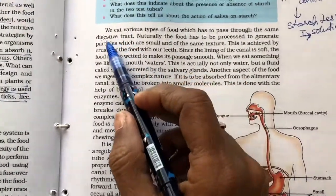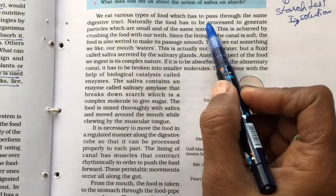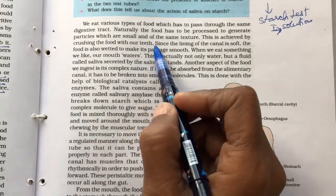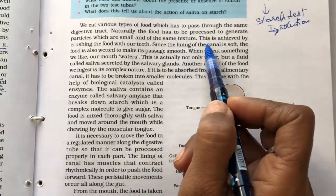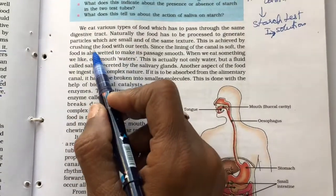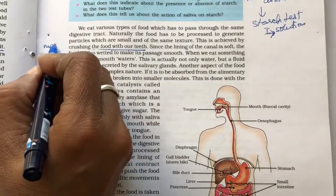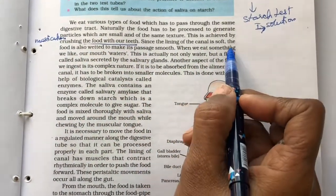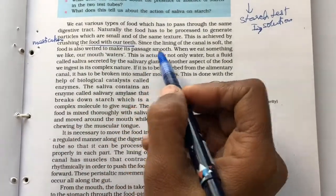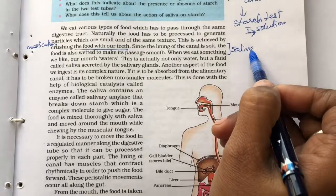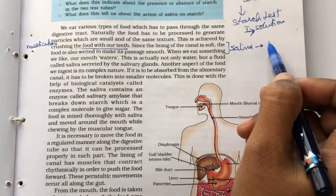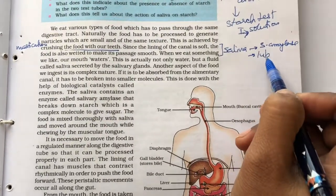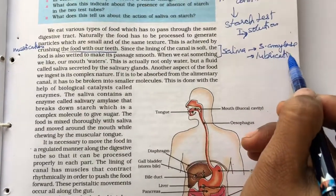Let us come back to the digestive system. We eat various types of food which has to be passed through the same digestive tract, naturally the food has to be processed to generate particles which are small and of the same texture. This is achieved by crushing the food with our teeth, so teeth basically are for mastication or chewing. Since the lining of canal is soft, the food is also wetted to make its passage smooth. So what is the function of saliva here? Saliva not only contains enzyme, salivary amylase, but it also helps in lubrication by wetting the food.